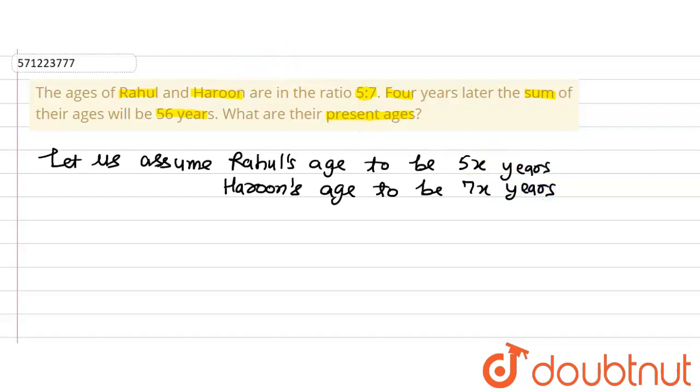Now following the question further, what we see is that 4 years later the sum of their ages will be 56 years. Rahul's age 4 years later will be 5x, that is Rahul's present age plus 4 years. So plus 4, this will be Rahul's age after 4 years. Harun's age after 4 years will be Harun's present age plus 4, this is Harun's age after 4 years and the sum is equal to 56 years.